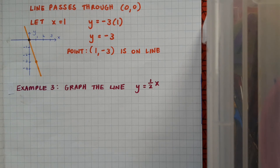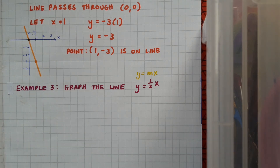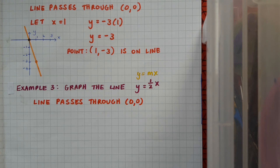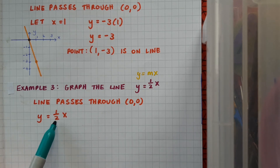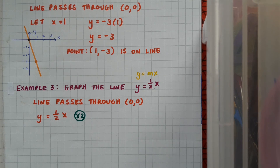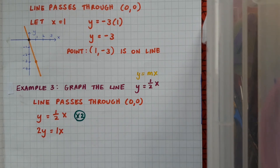Let's look at one more example. This time we're graphing the line y equals a half x. We can clearly see the format y equals mx, telling us the line goes through (0, 0). But this equation has a fraction in it, so we'll probably get a fraction answer when we substitute a number in. A nice way of dealing with this is to multiply the whole equation by the denominator to eliminate the fraction, multiplying everything by 2 to get 2y equals x. This makes things easier when we get to drawing the graph.